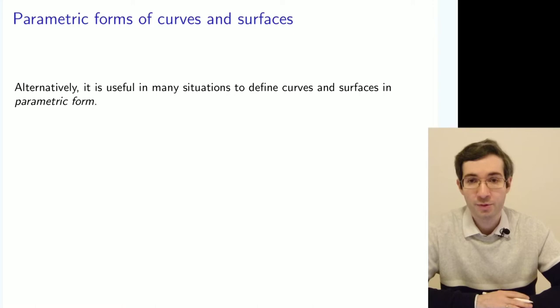Two equations are needed for that as I explained because you need to get an intersection. A different form, much more useful form, I have to say, is a parametric form of describing surfaces.